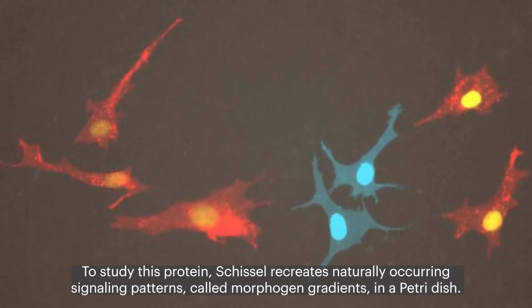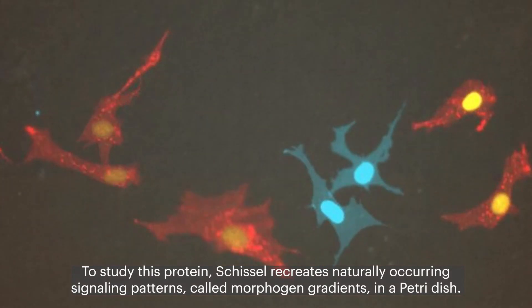To study this protein, Schlissel recreates naturally occurring signaling patterns called morphogen gradients in a petri dish.